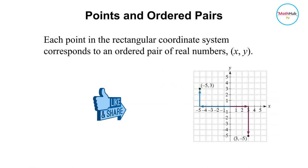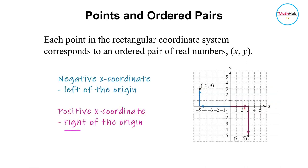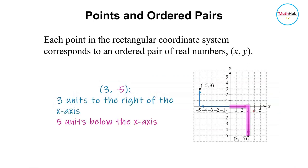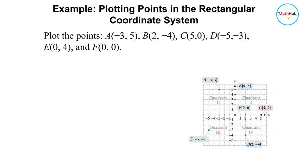For the point 3, negative 5 — this means 3 units to the right of the origin. So along the x-axis you go 3 units, and then since it is negative, you go down 5 units. This is the point corresponding to 3, negative 5. Consider plotting the following points as examples.